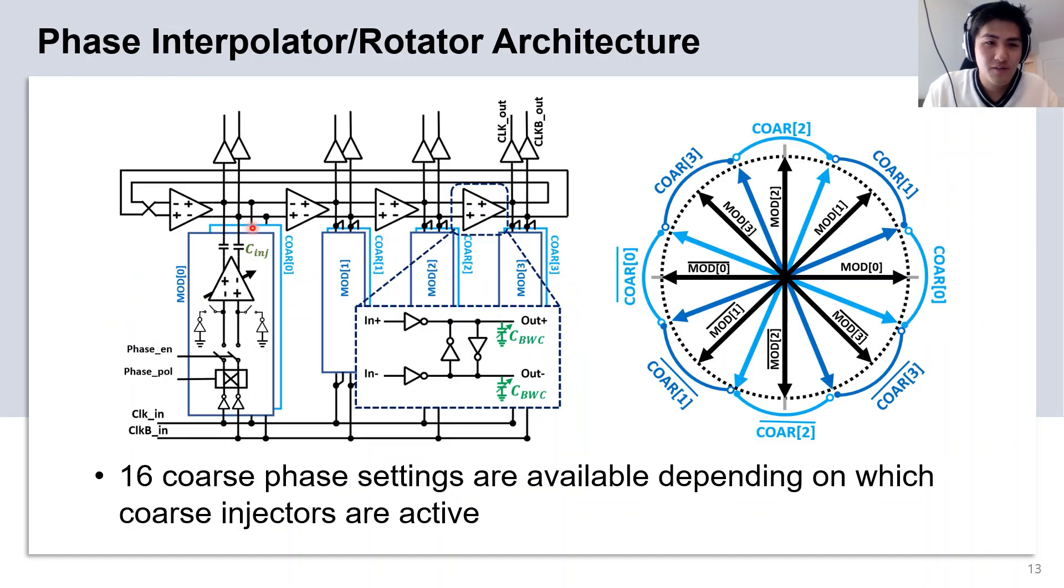The four coarse phase injectors, in combination with the four modulating injectors, create the 16 coarse phase settings as shown in this diagram here.